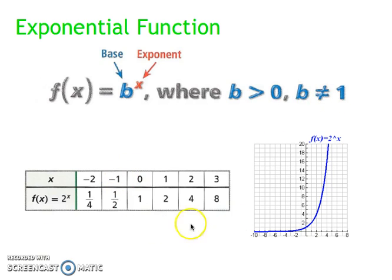So let's look at the example below. We have f of x equals 2 to the power of x. So when we substitute in negative 2, negative 1, 0, 1, 2 and 3 in for x, these are our outputs.